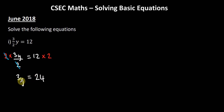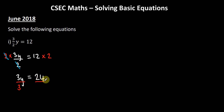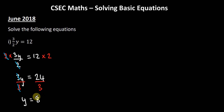The only thing left to make y the subject is to get rid of this 3. Since 3y means we're multiplying y by 3, we do the opposite and divide both sides by 3. The 3 cancels the 3, leaving us with y equal to 24 divided by 3, which is 8. So our answer is y equals 8.